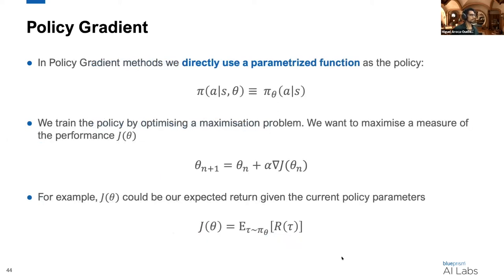So as I just mentioned, policy gradient methods directly optimize a parameterized function. We have this policy denoted as π, and we take in the state and output a distribution over actions, parameterized with some parameters θ. We train our policy by optimizing a maximization problem. We want to maximize some measure of our performance, J.